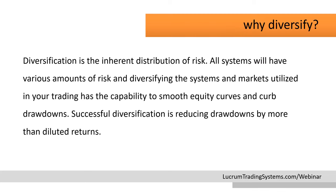So the question in this presentation is: why diversify? Diversification is the inherent distribution of risk. All systems will have various amounts of risk, and diversifying the systems and markets utilized in your trading has the capability to smooth equity curves and curb drawdowns. Successful diversification is reducing drawdowns by more than diluted returns. People in the automated trading world don't put as much emphasis on diversification as they could or should. If you're serious about automated trading and building and growing your account, diversification is a cornerstone.